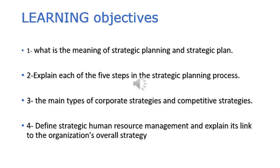In this topic we want to cover four points. Number one, what is the meaning of strategic planning and strategic plan, and what is the difference between them? Number two, we want to know the five steps necessary in the strategic planning process. Number three, the main types of organizational strategies and competitive strategies. Number four, the meaning of HR strategy and the relationship between HR strategy and the organization's overall strategy.